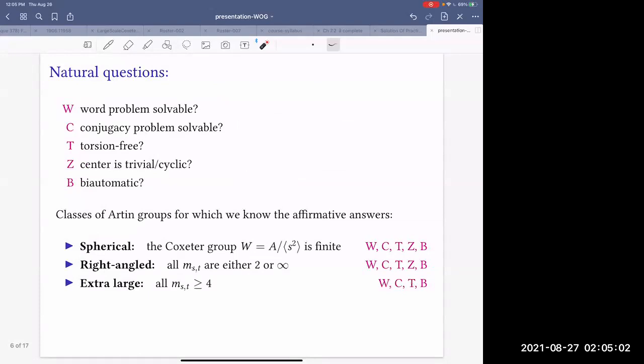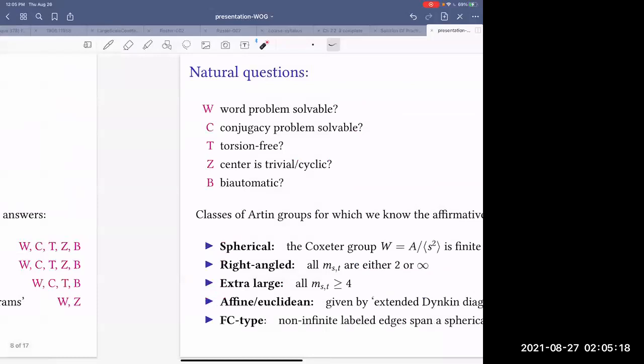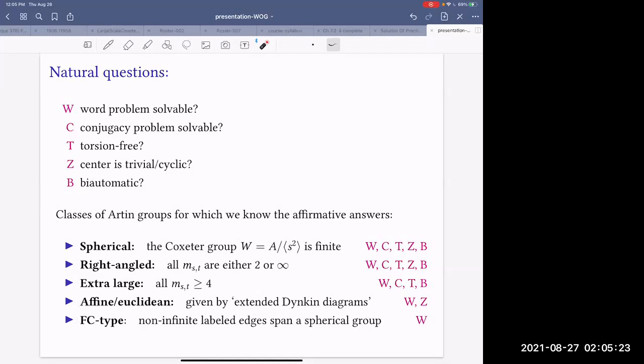The same happens if we look at right-angled Artin groups. These are the groups where all numbers M_ST are either 2 or infinity. There are other classes. For example, extra-large Artin groups, where the labels are bigger than 4. Affine or Euclidean Artin groups given by extended Dynkin diagrams. And recently, interest attracted Artin groups of FC type.